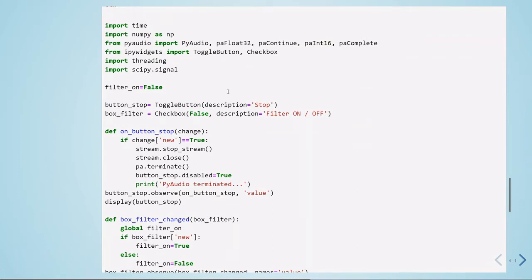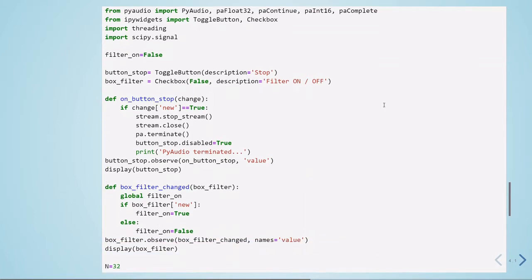Here I'm defining a function to turn the filter on and off. We're defining some buttons to stop, so when I run the cell it will automatically start capturing audio from the microphone. When I press stop it will stop and do all the closing procedures for PyAudio. We also have a checkbox to turn the filter on and off.